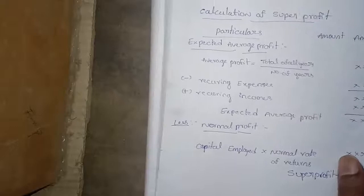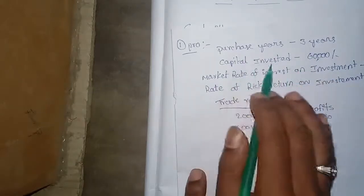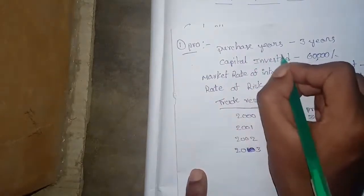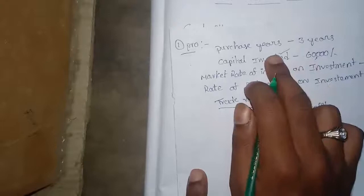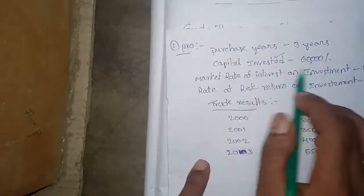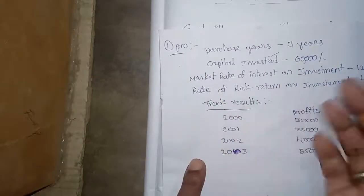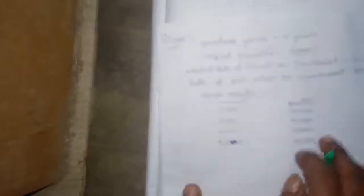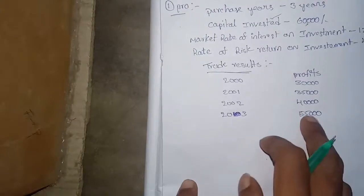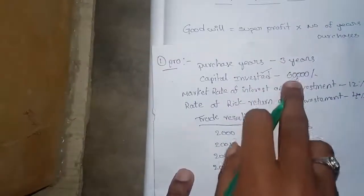We have a full question. The problem: capital employed is given. The market rate of interest on investment — the normal rate of return — is 4%. We are given four years of profits, and we need to calculate goodwill using the super-profit method.